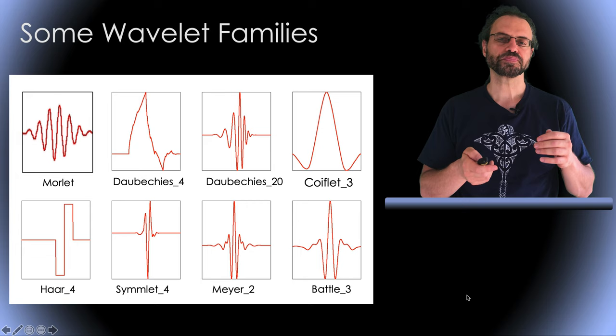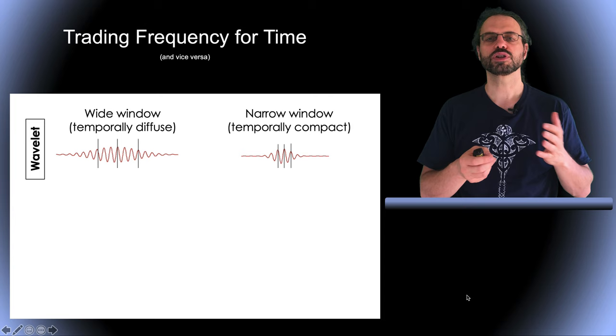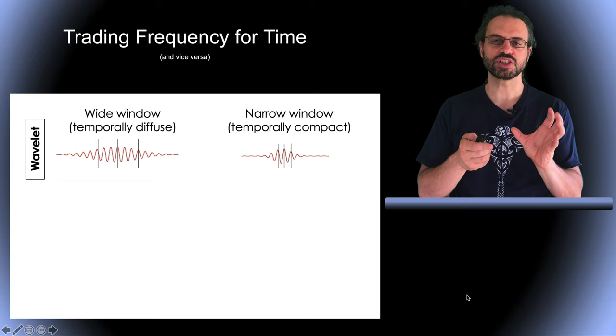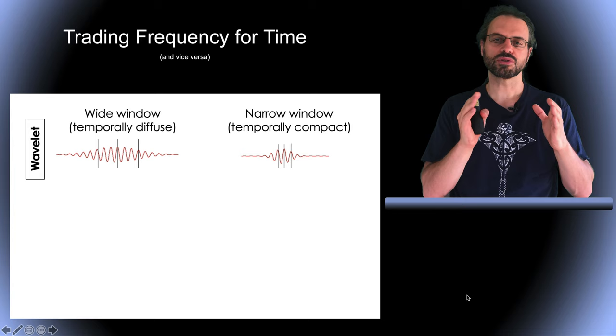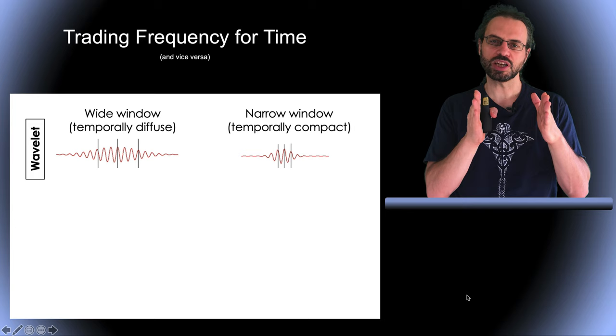As I mentioned earlier, there is always a trade-off between time and frequency. A wavelet is a packet of energy localized in time and frequency. The width of the wavelet depends on the standard deviation of the Gaussian window and taper for a Morlet wavelet. The width determines how accurately a change in amplitude can be localized in time.